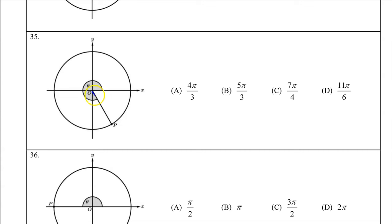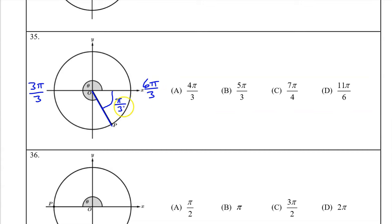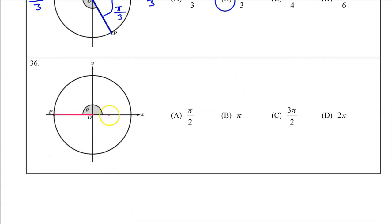For number 35, the terminal ray is not right in the middle of the quadrant. The reference angle is bigger than pi over 4 — it must be pi over 3. That means theta is a multiple of pi over 3. Let's think of pi as 3pi over 3 and 2pi as 6pi over 3. That means theta is one multiple less than 6pi over 3, so it must be 5pi over 3. And the answer is B. Number 36, easy peasy. We know that a semicircle is pi. So the answer is B.